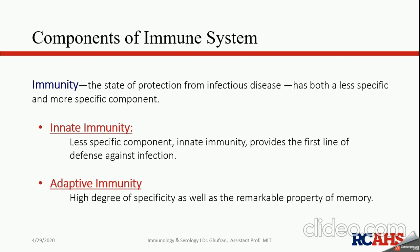Adaptive immunity, on the other hand, is highly specific. It has a high degree of specificity as well as the remarkable property of memory. Innate immunity has no memory response, whereas adaptive immunity does. The two major components of adaptive immunity are lymphocytes and antibodies.